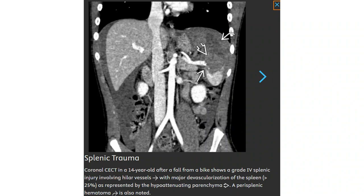This is a contrast CT in a 14-year-old after a fall from a bicycle, showing a grade 4 spleen injury. There is subcapsular hematoma with major devascularization of the spleen, more than 25% of the parenchyma. Perisplenic hematoma is also noted.